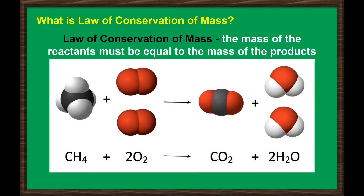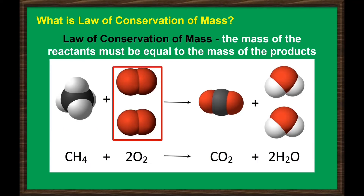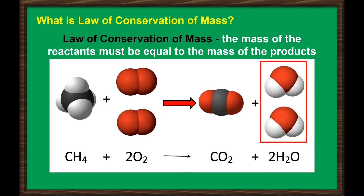For example, we have a methane gas which is made up of 1 carbon and 4 hydrogen, and reacted with 4 atoms of oxygen. The reaction leads to the production of carbon dioxide and water. Notice that the number of carbon, hydrogen, and oxygen remains the same, or equal, for both reactants and products.